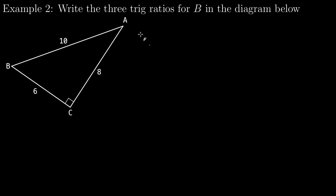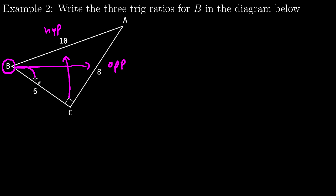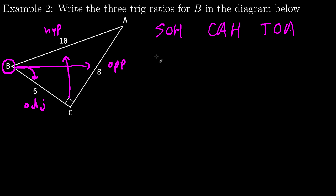Moving on: write the three trig ratios for B in the diagram below. I'm going to start with B and label my sides. Across from the right angle is the hypotenuse, across from B is the opposite leg, and the leg next to B is the adjacent leg. Using SOH-CAH-TOA, sine of B equals opposite over hypotenuse — that's 8 over 10, which reduces to 4 fifths.